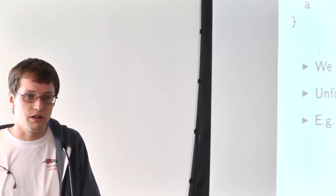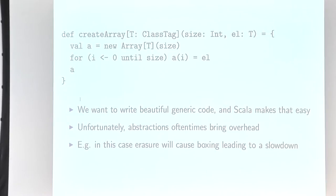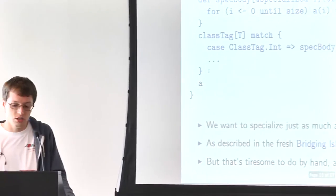As I mentioned: code generation, static checks, and DSLs. First, code generation — and a very good example is performance. Here we see generic code that creates an array and fills it with some predefined value. Scala is powerful in writing generic beautiful code, but it often entails performance problems. Because of type erasure, when we fill an array with integers, they will be boxed, degrading performance significantly.